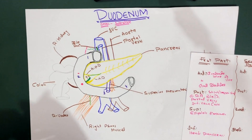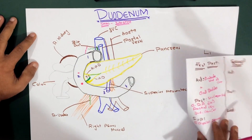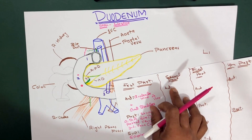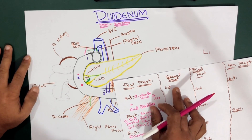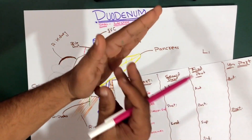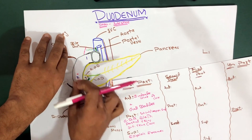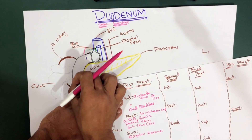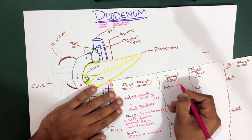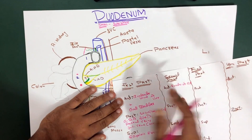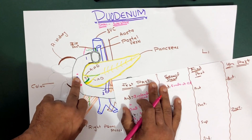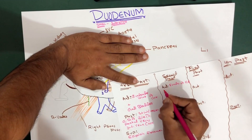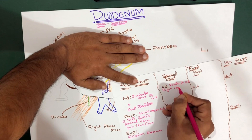Now let's talk about the relations of the second part of the duodenum with the structures around it. Anteriorly, we have the fundus of the gallbladder. We have the liver with the gallbladder hanging down, and the gallbladder covers over the second part. The fundus - the bulging end part of the gallbladder - is on the anterior side. Also anteriorly, we have the right lobe of the liver.